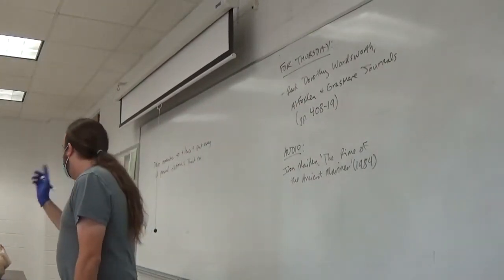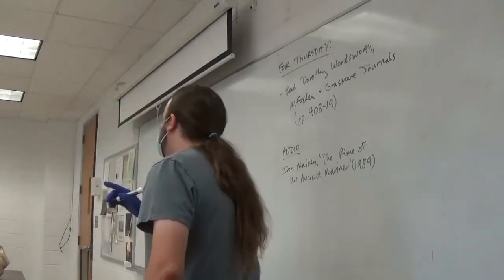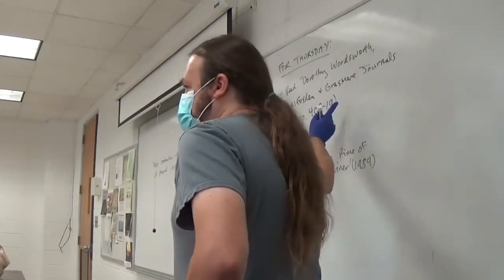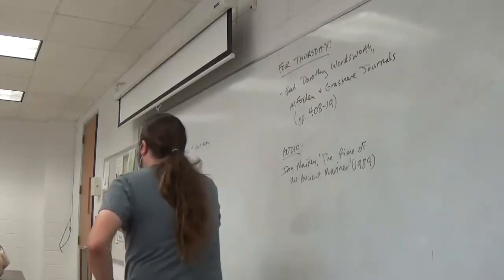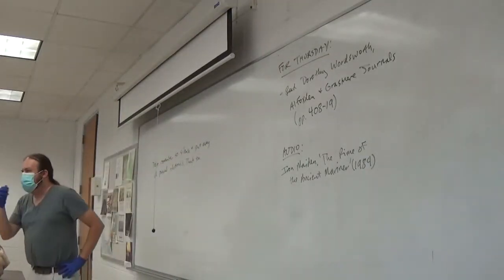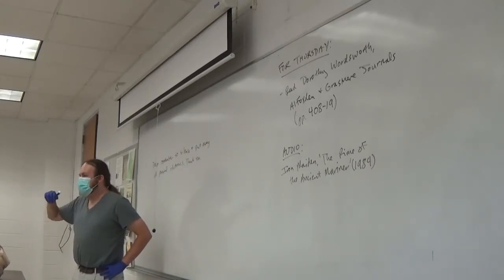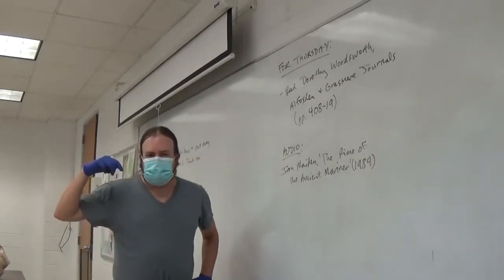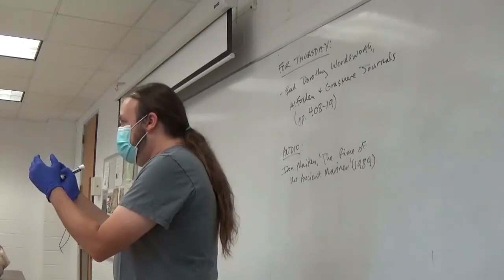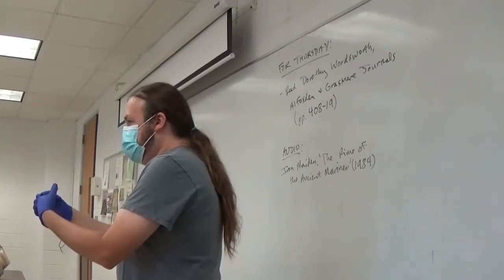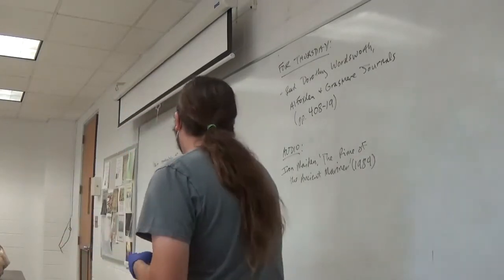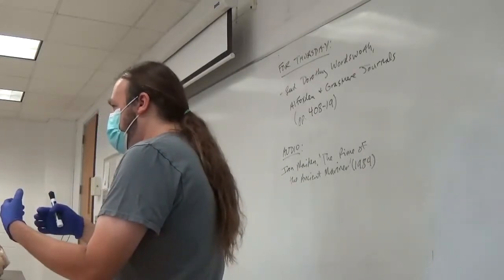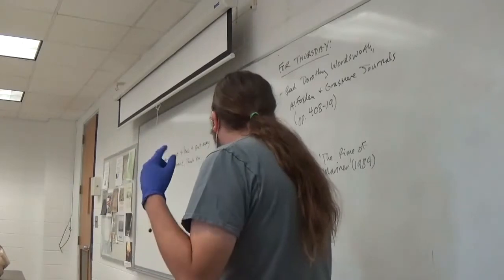Before we get started, I just want to remind everybody what we're doing for next time. You're going to be reading the excerpts from Dorothy Wordsworth's Grasmere journals. We're going to be looking at the role Wordsworth's sister played — not just as an imaginative foil for him in poems like Tintern Abbey, where the sister is a prism through which he can see his own youthful reactions replayed — but how she actually played an active role in shaping her brother's work and Coleridge's work as well.